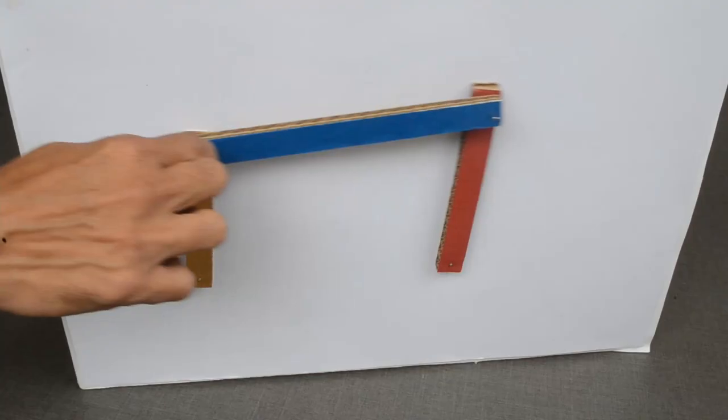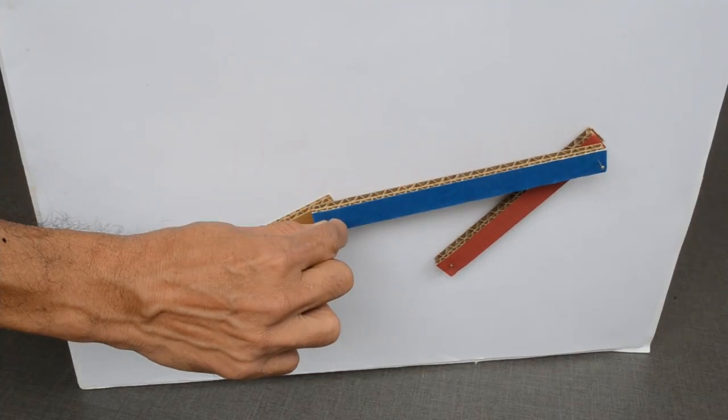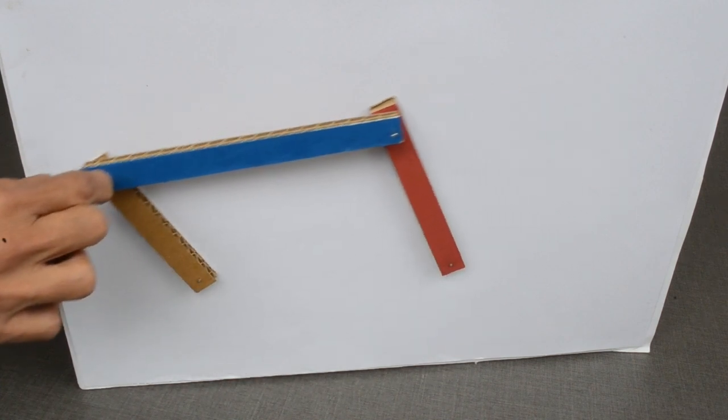Moving the brown strip to the right also moves the red strip to the right. Same is true for the other side as well.